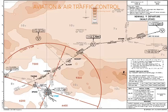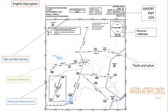A standard instrument departure route is the standard air traffic service route identified in an instrument departure procedure, by which aircraft should proceed from the takeoff phase to the en-route phase. SIDs are graphical and textual representations of the departure path from an airport. They show track and distance between two waypoints, and speed and altitude restrictions at waypoints. The AIS, aeronautical information service section, is responsible for the publication of SID navigation charts.